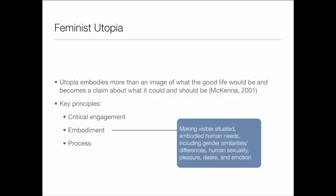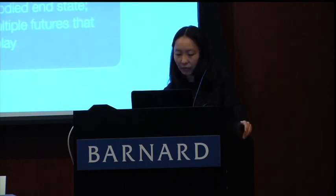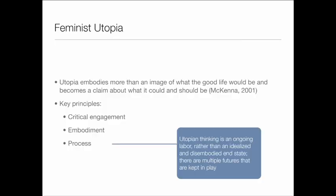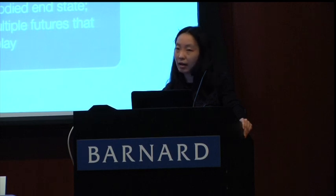The second key principle of feminist utopia is embodiment. It's about making visible situated embodied human needs, including gender similarities and differences, human sexuality, pleasure, desire, and emotion. The third principle is the notion of process, which combines pragmatism and feminist political theory with an emphasis on evolution. It's about multiple possible futures in progress, not about a final perfect end state. Feminist utopia is an ongoing task.